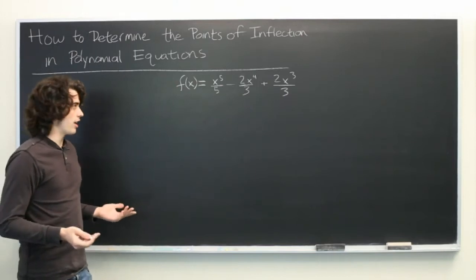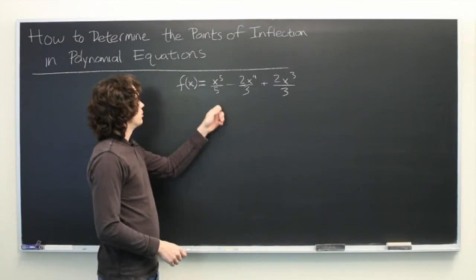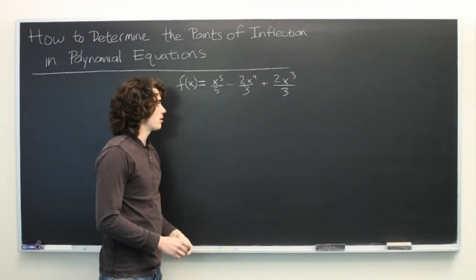So, let's walk through an example. Here we have a polynomial f(x) = x^5/5 - (2/3)x^4 + (2/3)x^3.